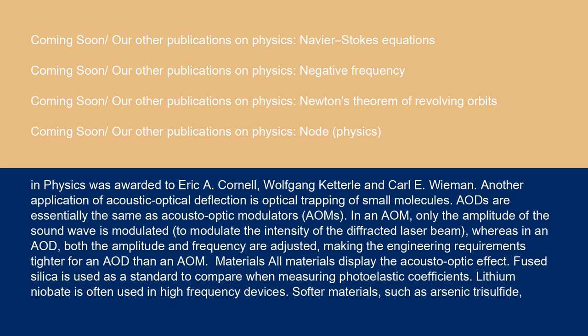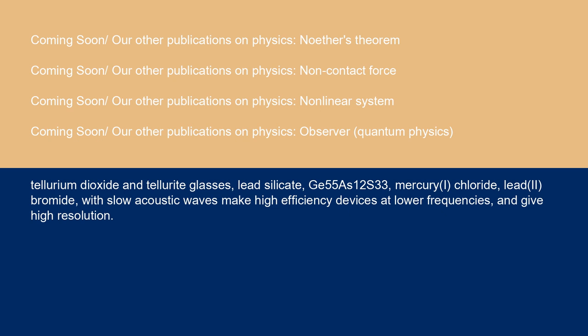Materials: All materials display the acousto-optic effect. Fused silica is used as a standard to compare when measuring photoelastic coefficients. Lithium niobate is often used in high-frequency devices. Softer materials such as arsenic trisulfide, tellurium dioxide and tellurite glasses, lead silicate, GUF 55 (12S33), mercury iodide chloride, lead dibromide, with slow acoustic waves, make high-efficiency devices at lower frequencies and give high resolution.